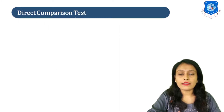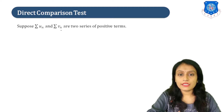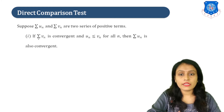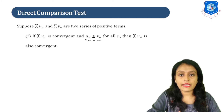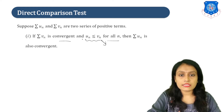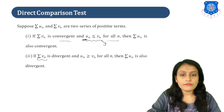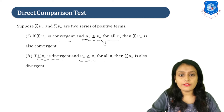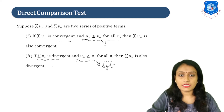Next topic is the direct comparison test. Suppose u_n and v_n are two series of positive terms. If series v_n is convergent and u_n is less than or equal to v_n for all N, then series u_n is also convergent. If u_n is greater than or equal to v_n and v_n is divergent, then series u_n is also divergent by the direct comparison test.